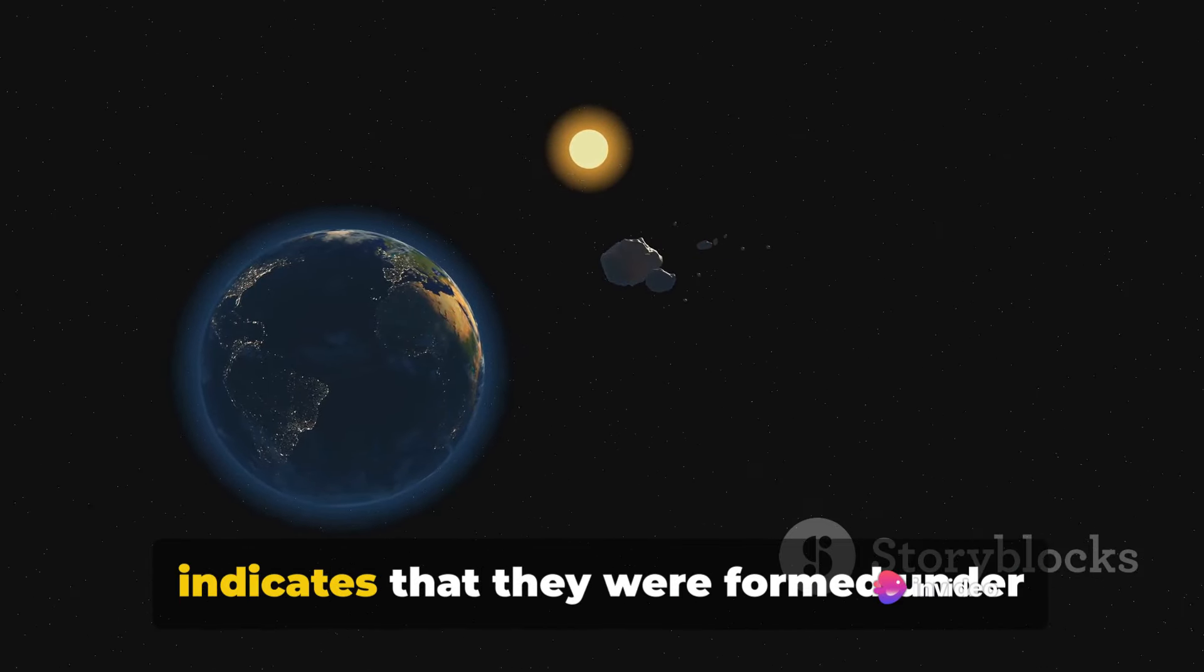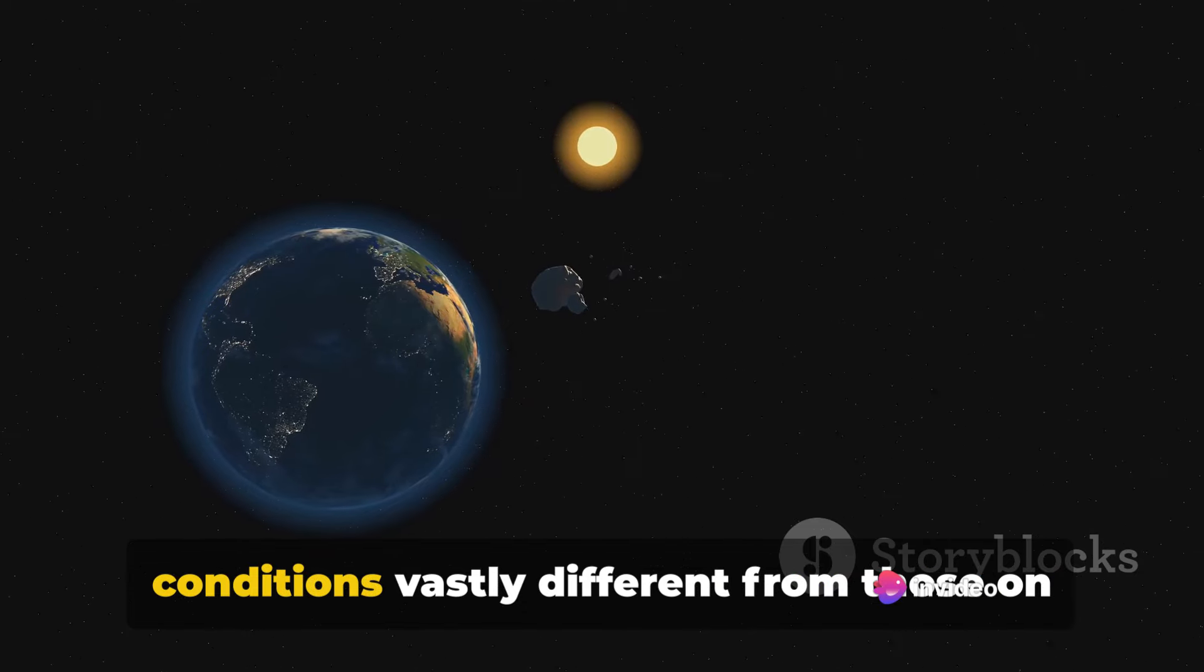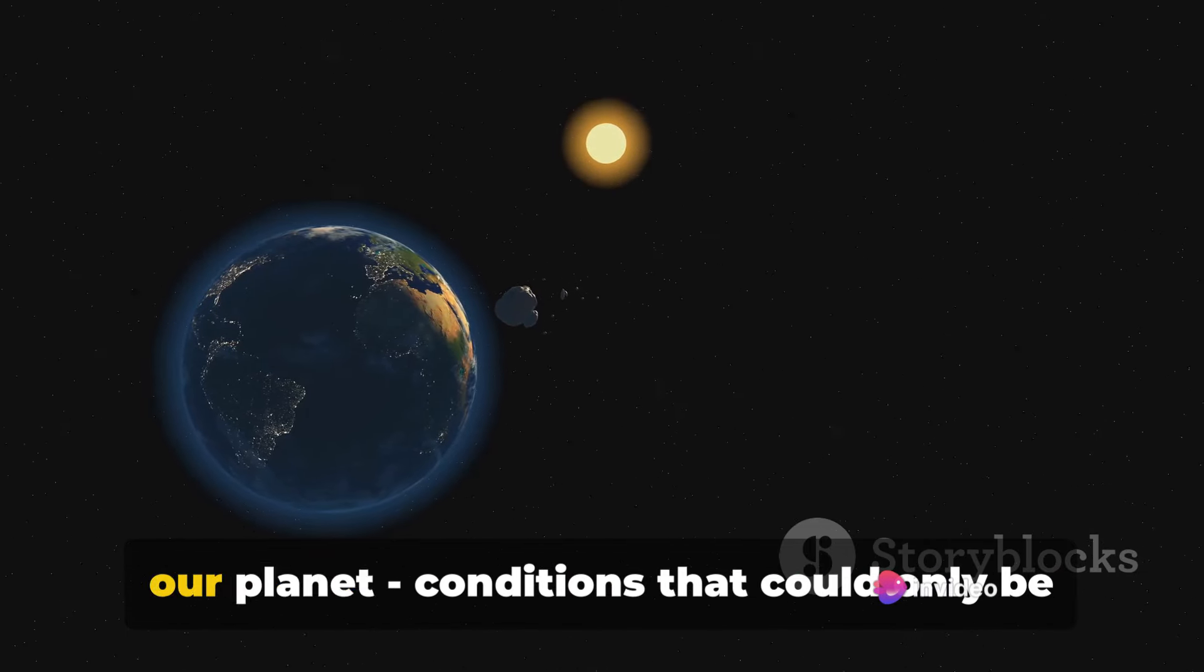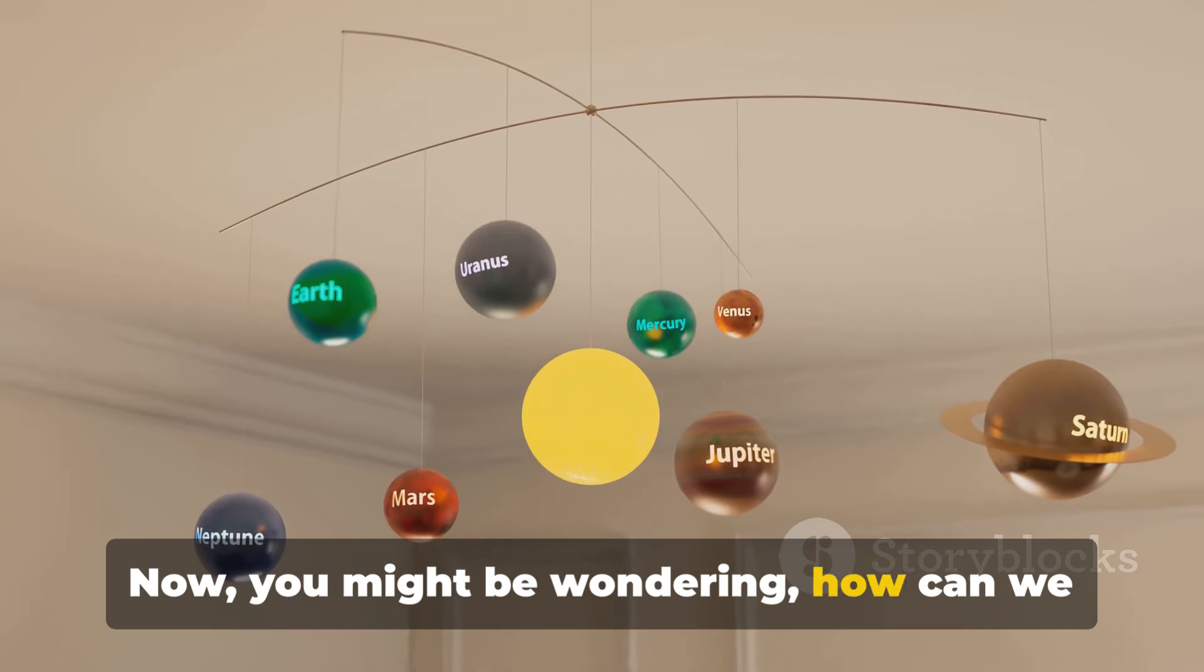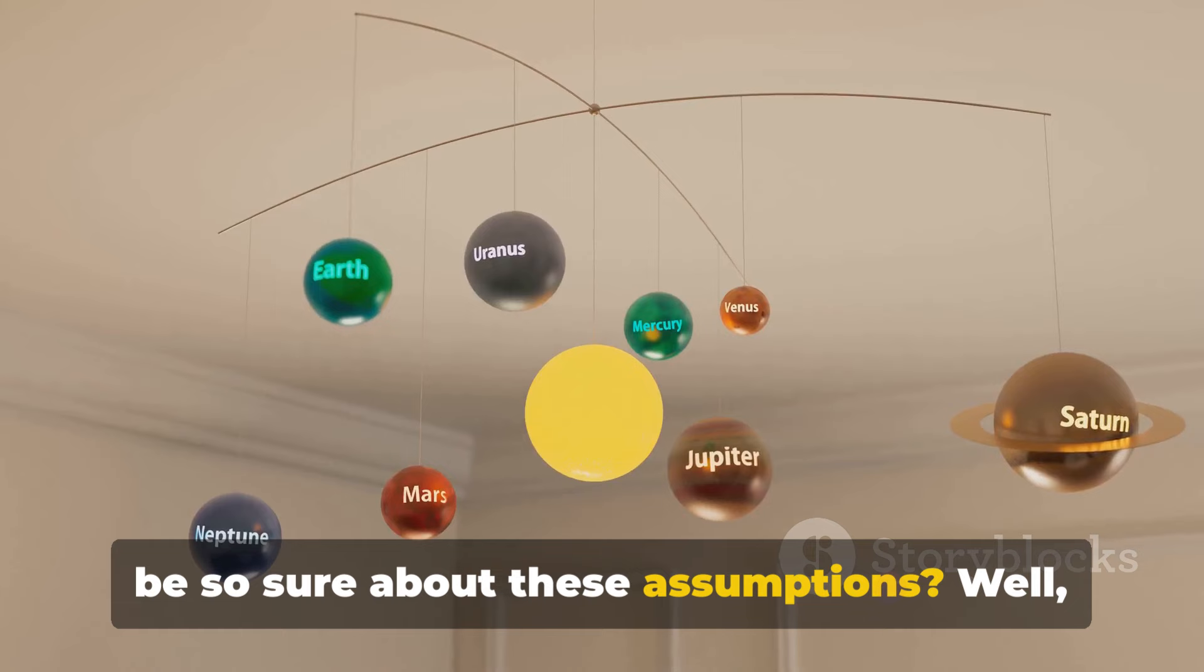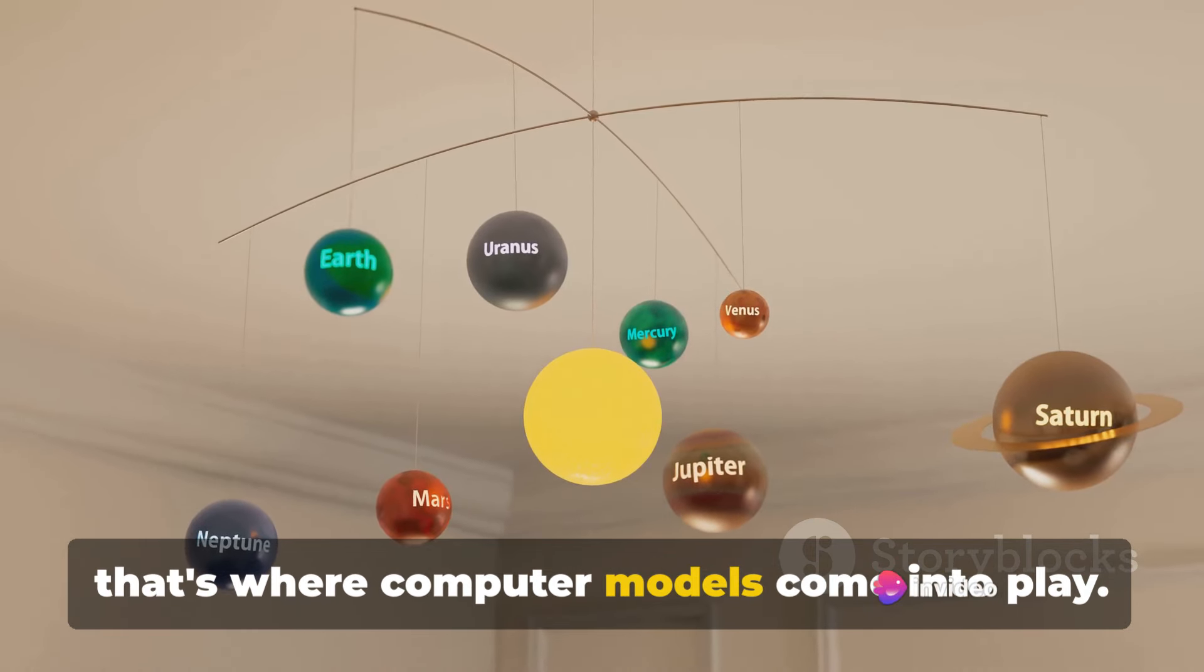The presence of these unique components indicates that they were formed under conditions vastly different from those on our planet, conditions that could only be present on another world. Now you might be wondering, how can we be so sure about these assumptions? Well, that's where computer models come into play.